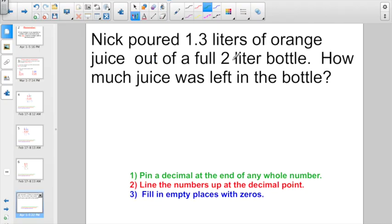So, check out this one and a story problem. Nick poured 1.3 liters of orange juice out of a full 2 liter bottle. How much juice was left in the bottle? Obviously, it's got to be a subtraction problem. I got the whole number two, but I want to write it with a decimal point, because I have to go and subtract 1.3 from it. So, I'm just going to write it out as 2.0.